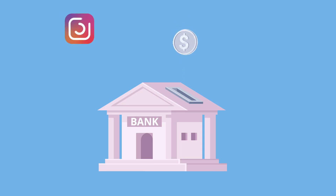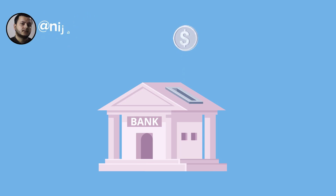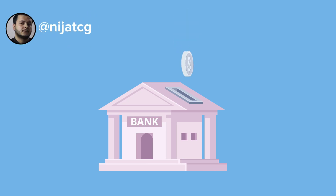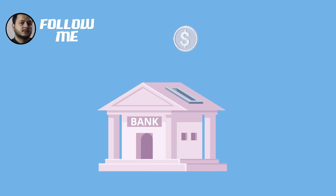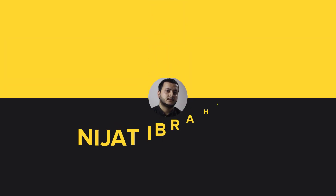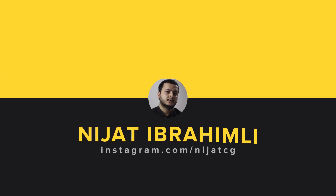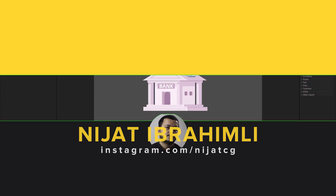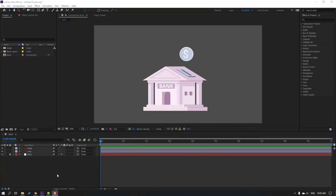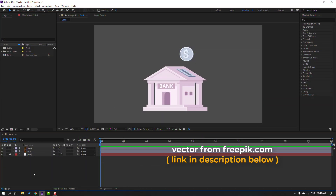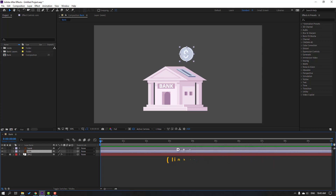Hi guys, welcome to my new tutorial. In this tutorial I'm going to show how to make this animation with After Effects. Let's get started. Vectors from 3peak.com — I will add downloading and project files in the description. First step, let's select this coin.